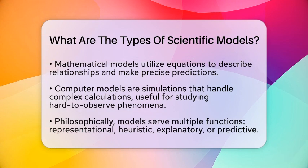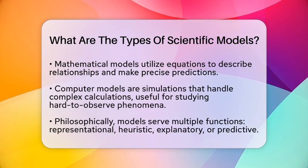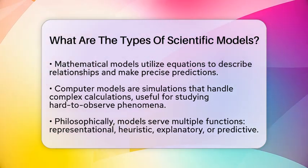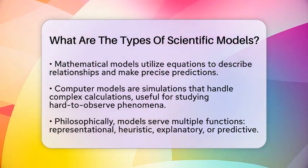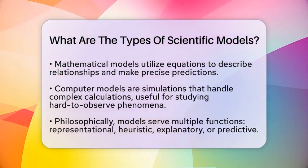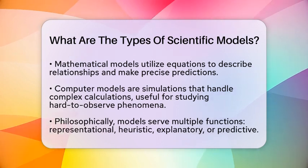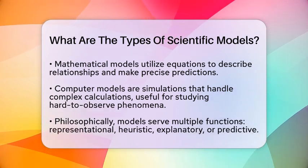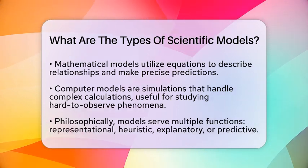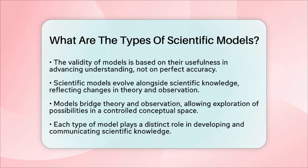From a philosophical standpoint, scientific models are not just mirrors of reality. They serve multiple functions, such as representational, heuristic, explanatory, or predictive. This variety means that models can be idealized, simplified, or partial. Their validity relies on their usefulness in advancing scientific understanding rather than on perfect accuracy.